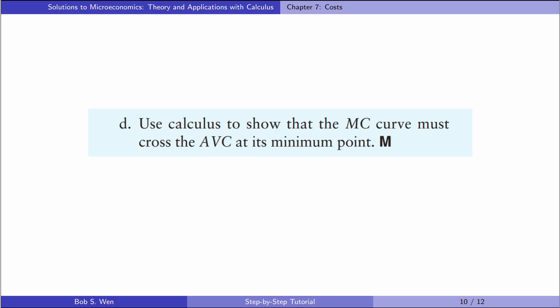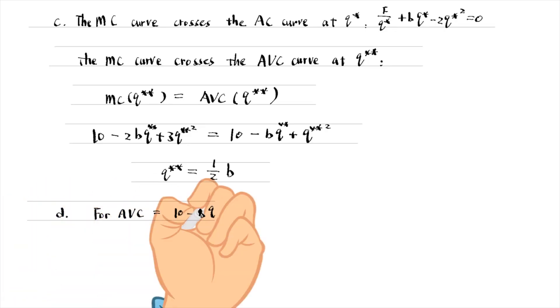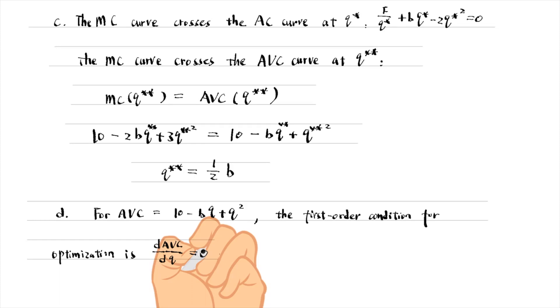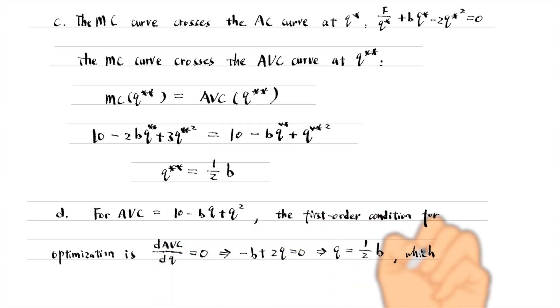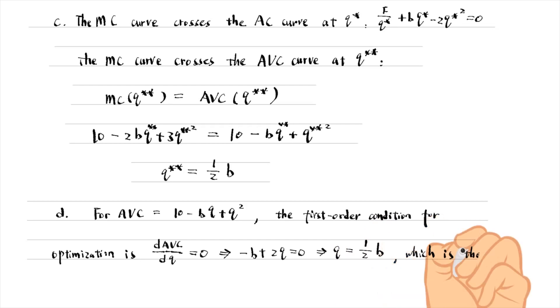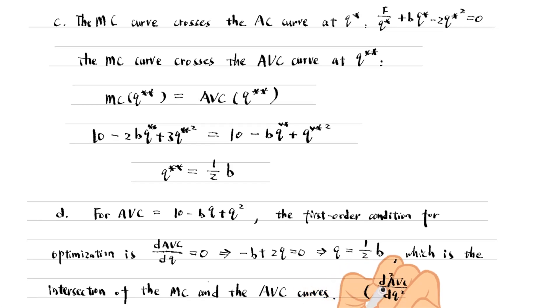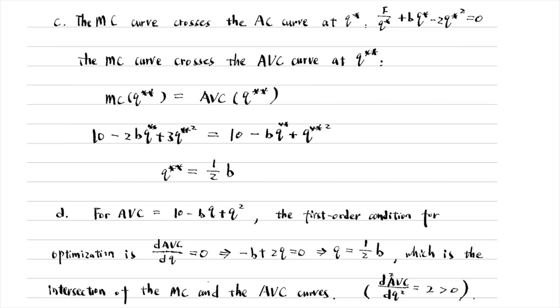In part D, we use calculus to show that the marginal cost curve must cross the average variable cost curve at its minimum point. For the average variable cost, its first order condition for optimization is the first derivative equals zero. We have Q equals B over 2, which is the same as the intersection of the marginal cost and the average variable cost curves. We can check the second order condition for a local minimum: the second derivative is positive, so the marginal cost curve crosses the average variable cost curve at its minimum point.